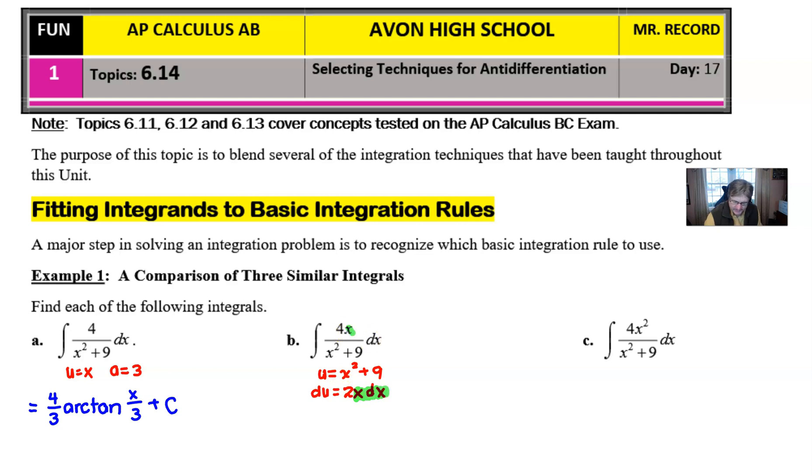So basically those things that I have in green will allow me to interchange them for a du. But this 2 is a bit problematic, so we fix that by flipping it upside down and putting it out in front. But lo and behold, there's already a 4 that's going to come in front, joined by that 1 half. And then essentially we're just integrating a 1 over u form with respect to u.